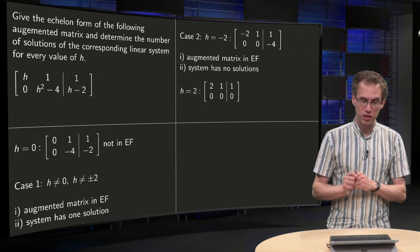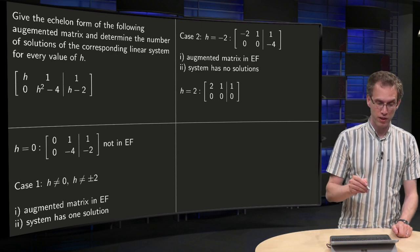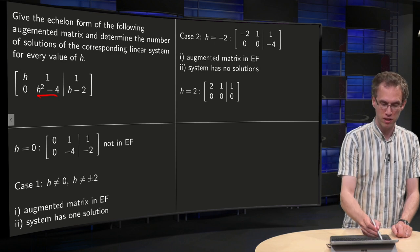Then we continue with the h equals minus two case, what happens in that case. If h equals minus two, we have a zero over here, that's why it's a special case, we get a minus four over here, and a minus two over here.